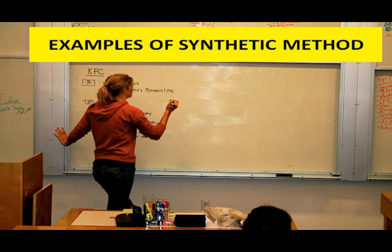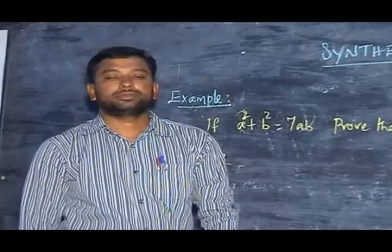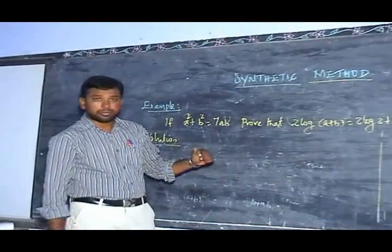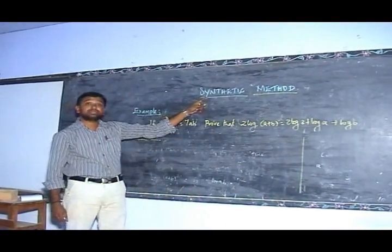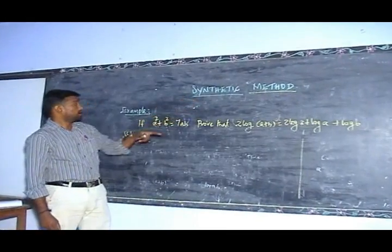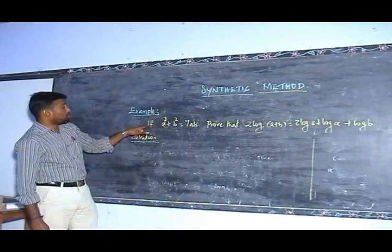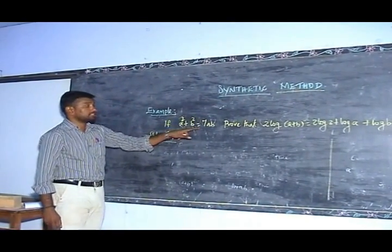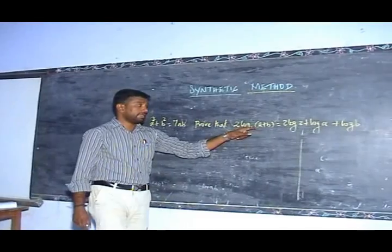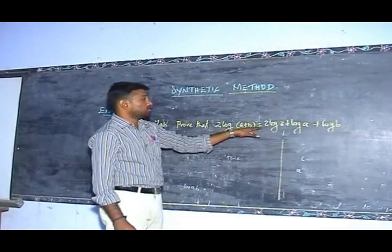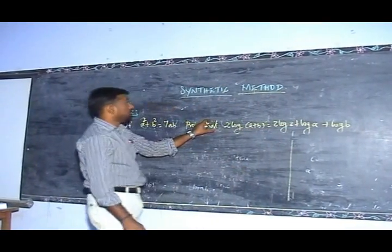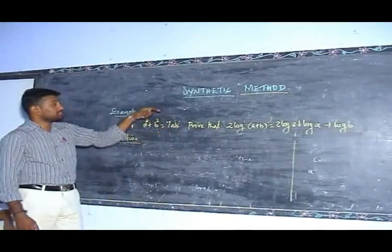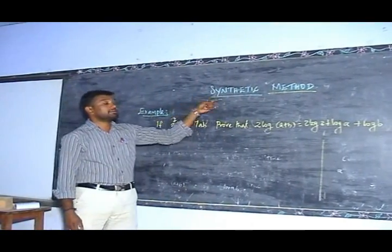Now I am going to enlighten some examples of synthetic method. The first problem is: if a squared plus b squared is equal to some multiple of ab, prove that 2 log(a + b) is equal to 2 log 3 plus log a plus log b. Now I will solve that problem using the synthetic method.